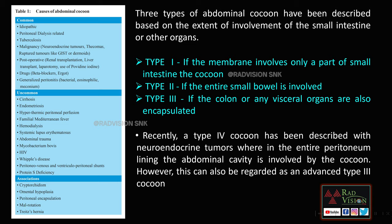There are three types of abdominal cocoon: Type 1 — the membrane involves only part of the small intestine; Type 2 — the entire small bowel is involved; Type 3 — the colon or other visceral organs are also encapsulated within the cocoon. Recently, a Type 4 cocoon has been described with neuroendocrine tumors, wherein the entire peritoneum lining the abdominal cavity is involved.